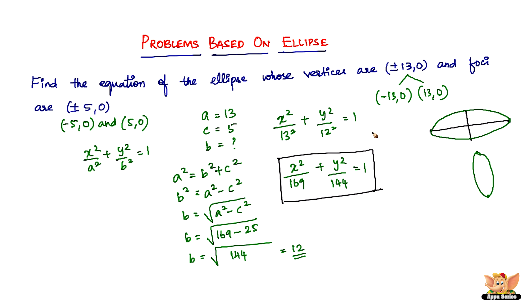It was a very simple problem. The key takeaway from this video is how to identify if an ellipse is horizontal or vertical. You need to see the vertices and where a lies - on the x-axis or y-axis. If a lies on the x-axis, it's this kind of ellipse, and then you just find b.